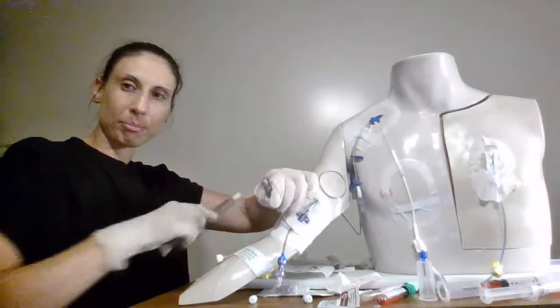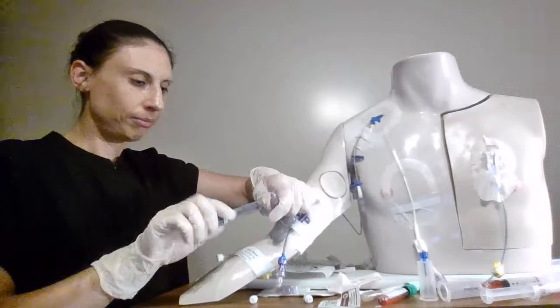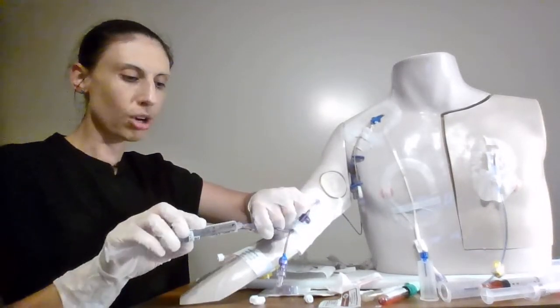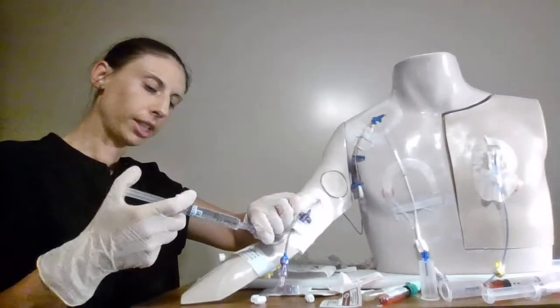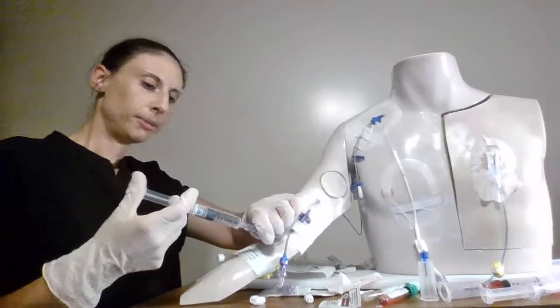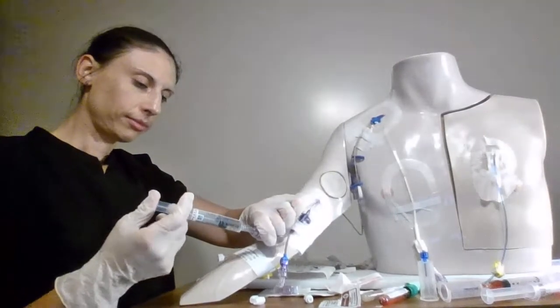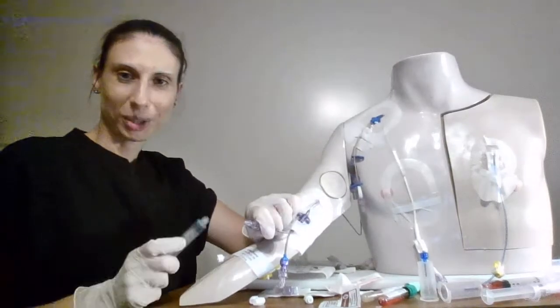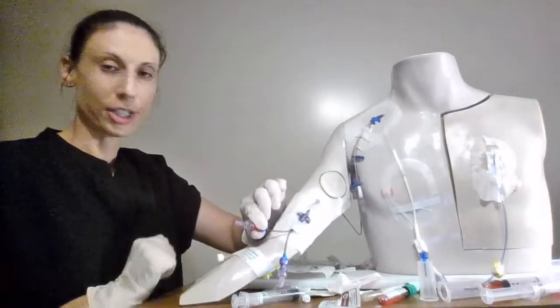We're going to do that again because remember blood is sticky. We're going to try to get all that blood out. Always after a blood draw it's 20 cc's. Again push pause, push pause, nice turbulent flow. And that's all we need. Our line is normal saline locked.